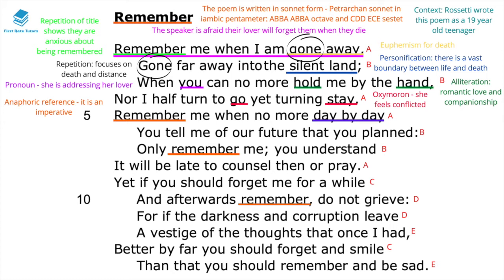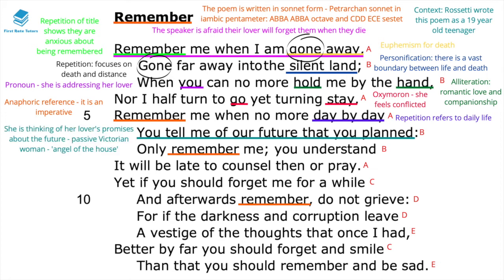Back to line five, 'when no more day by day' — this repetition refers to daily life, the mundane aspects of daily life. The speaker is saying: even as you settle back into normal, regular existence once I've passed away, you need to keep on remembering me. In line six, 'you tell me of the future that you'd planned' — she's thinking of her lover's promises about the future. This encapsulates the passive Victorian woman; Rossetti lived during the Victorian era and is evoking the notion of the 'angel of the house,' the woman who looks after the household, with the lover planning the future.